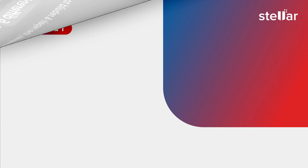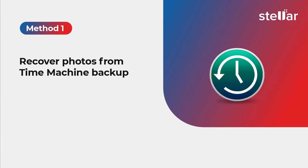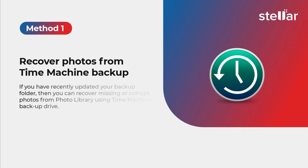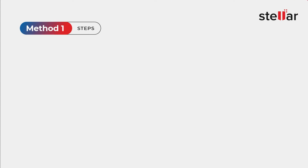Method 1: Recover Photos from Time Machine Backup. If you have recently updated your backup folder, then you can recover missing or corrupt photos from the photo library using a Time Machine Backup Drive. Just follow these steps.